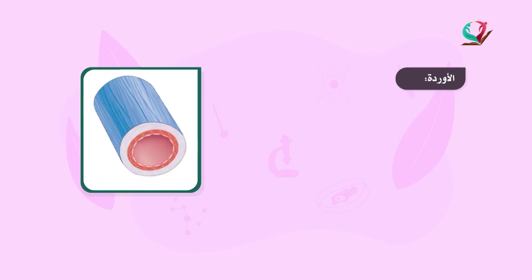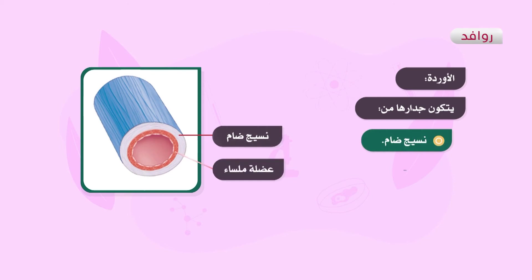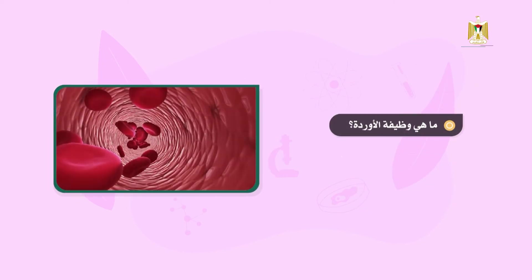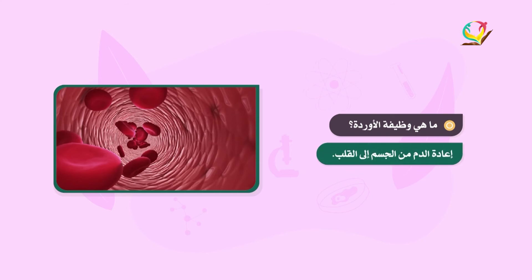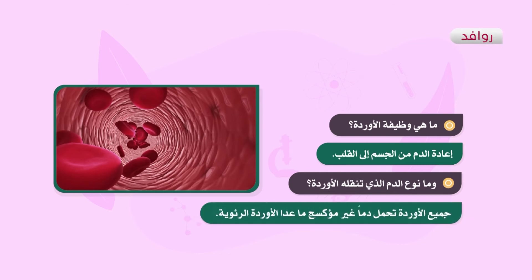النوع الثاني من الأوعية الدموية هو الأوردة. جدار الوريد يتكون من ثلاث طبقات من الأنسجة أيضاً كالشرايين: نسيج ضام وعضلة ملساء وطبقة طلائية. وظيفة الأوردة إعادة الدم من الجسم إلى القلب، وهي عكس وظيفة الشرايين. جميع الأوردة تحمل دماً غير مؤكسج ما عدا الأوردة الرئوية التي تنقل دماً مؤكسجاً من الرئتين إلى القلب.